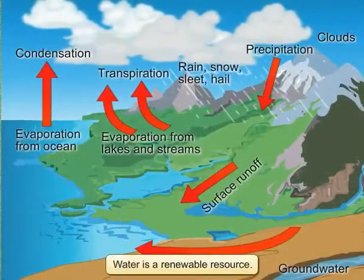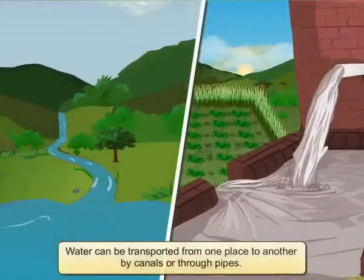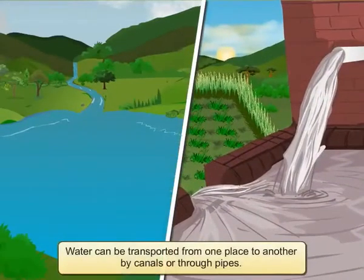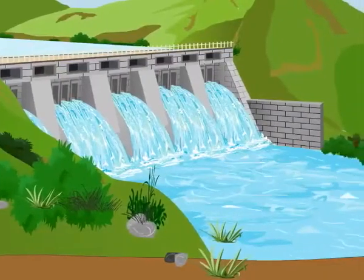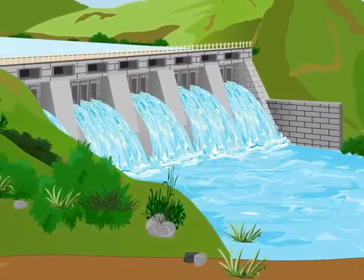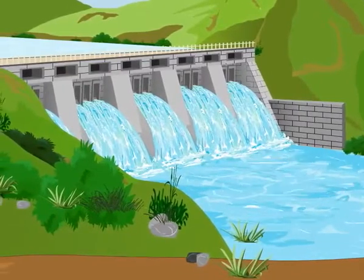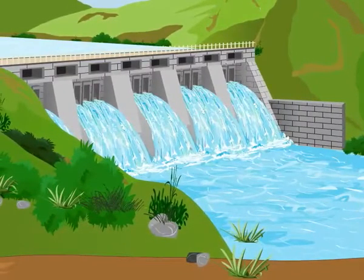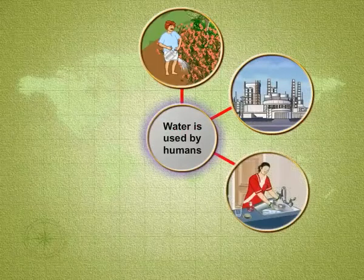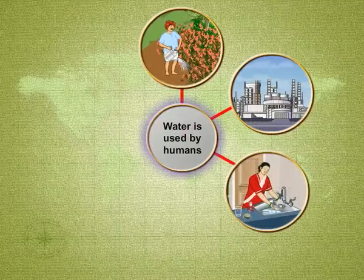Water is a renewable resource. Being liquid in nature, it can be transported from one place to another by canals or through pipes. Water is used by humans for a large number of activities. We use water mainly for agriculture, industries as well as for our domestic needs.